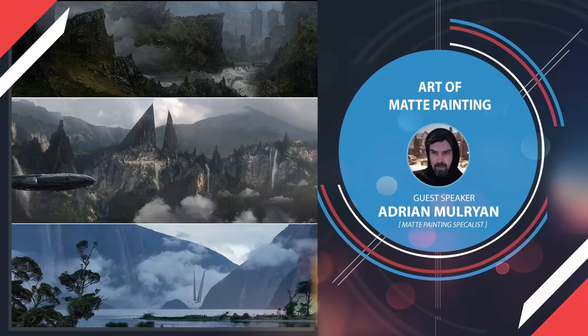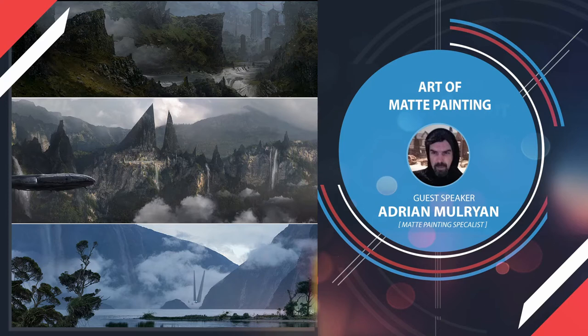A matte painting is a paint or representation of a landscape, set, or distant location that allows filmmakers to create the illusion of an environment not present at the filming location. Nowadays matte painting is widely used in VFX, animation, and game studios to replace sets and design various environmental elements. This week I had an opportunity to interview Adrian. It's going to be a lot of information in this video, so take some notes and enjoy the session.